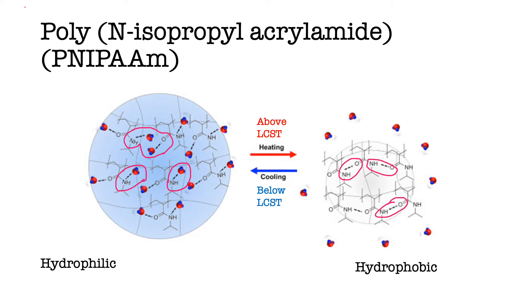These property changes can occur over a temperature change as little as just one degree Celsius, making it a very smart polymer. So it's fascinating learning about how poly-N-isopropylacrylamide can respond to temperature — but why is this useful in medicine?